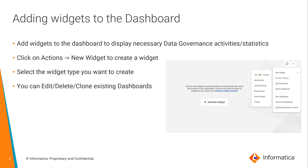In the new dashboard, you can select the actions button and select the option new widget to create a widget. There are various widget types available in CDGC as shown in the image. You can select the widget type that you want to create and then add properties to the widget. You can also edit, delete, or clone existing dashboards using the options listed in the actions button.